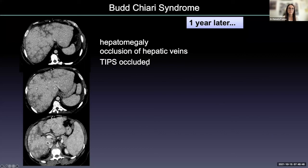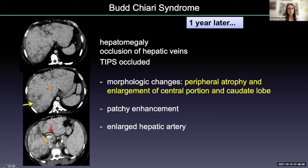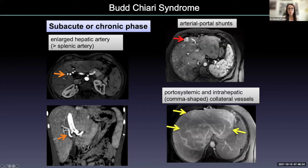One year later, the hepatic veins remained occluded and the patient was treated with TIPS, which is also occluded. Please look at the morphological changes — peripheral atrophy of the liver with enlargement of the central portion and the caudate lobe, patchy enhancement, an enlarged hepatic artery, and splenomegaly, but without ascites. These are the typical imaging findings in Budd-Chiari syndrome; we can also recognize arterio-portal shunts and portal systemic and intrahepatic collateral vessels.